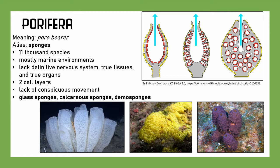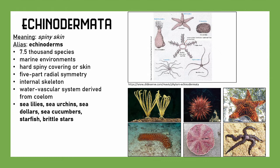Let's get to Echinodermata. It means 'spiny skin.' They don't really have a common alias; they're just called echinoderms. There are 7,500 species, and they are exclusively marine. They have a hard spiny covering and five-part radial symmetry. They often have tube feet, and a water vascular system derived from the coelom. Representative species include sea lilies, sea urchins, sand dollars, sea cucumbers, starfish, and brittle stars.